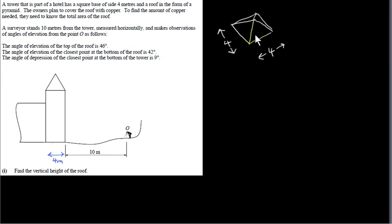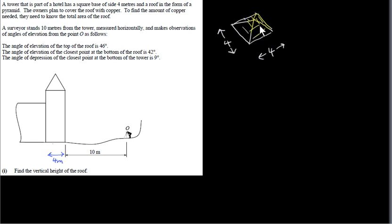Here is the pyramid on top of the tower. The owners plan to cover the roof with copper, so they need the total area of the roof — specifically the area of the four triangular faces. They don't need the area of the square base that the pyramid is sitting on; the square base is a four-by-four square. They only want the area of the exposed part of the roof, which is four congruent triangles.